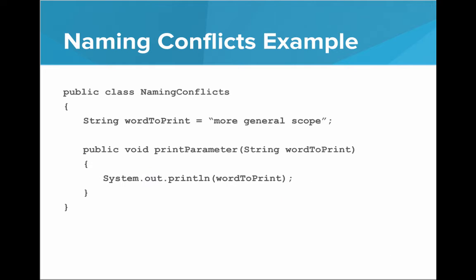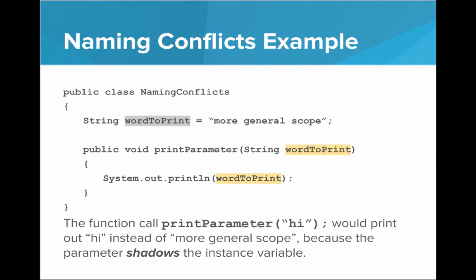What about with a parameter? Here again we have wordToPrint defined twice. Both of these variables share a scope — which one will take precedence? Since the parameter is more specific, it will take precedence over the instance variable, and the instance variable will be shadowed. So if we call a function printParameterHi, it would print out "hi" instead of "more general scope" — the parameter shadows the instance variable.